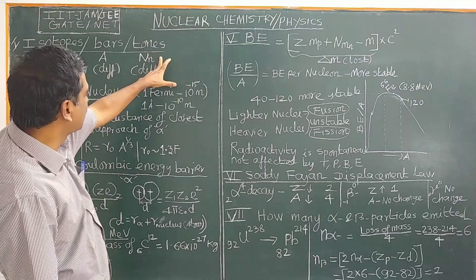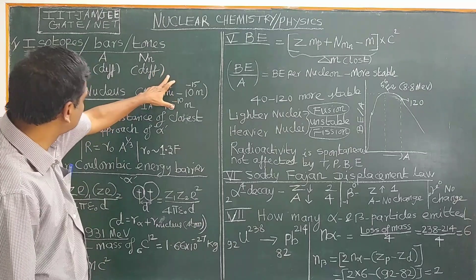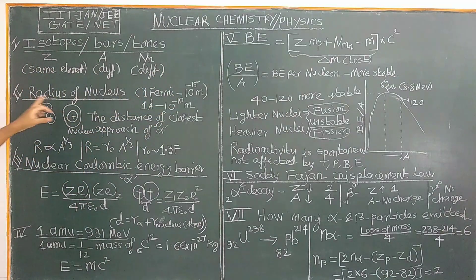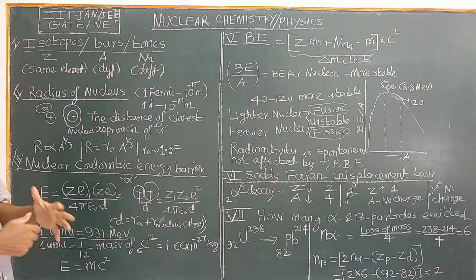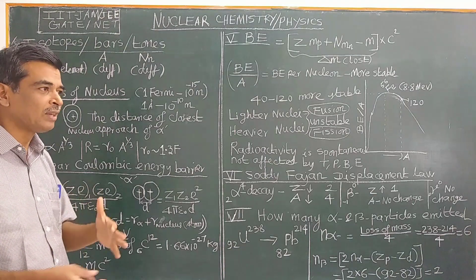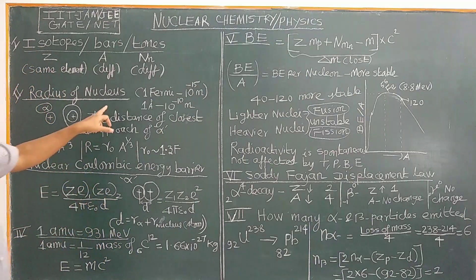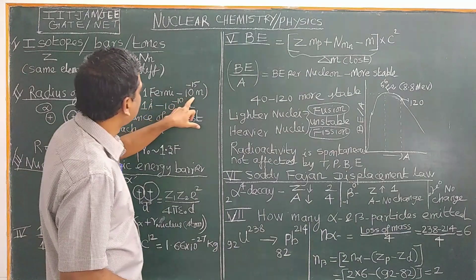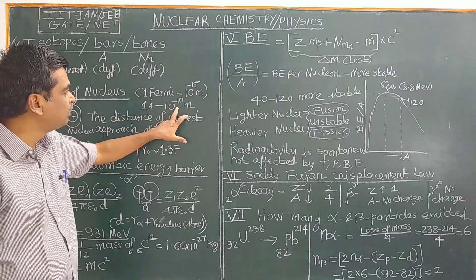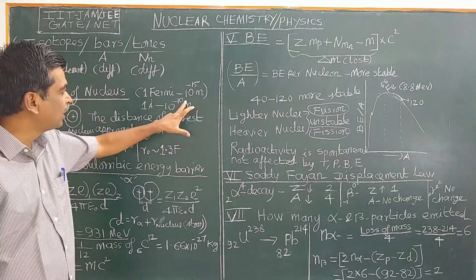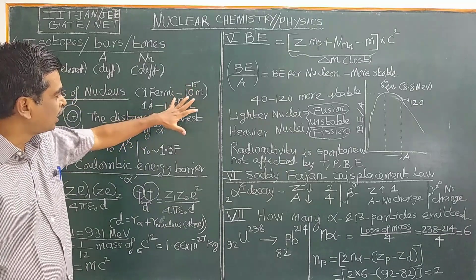Now let us go to the radius of the nucleus. The entire mass is concentrated in the nucleus because protons and neutrons are much heavier than electrons. The radius of the nucleus is of the order of 10⁻¹⁵ meters, whereas the radius of the atom is of the order of 10⁻¹⁰ meters.